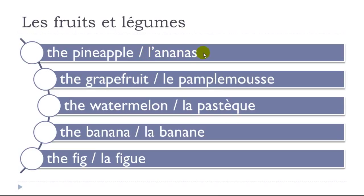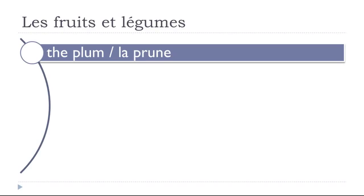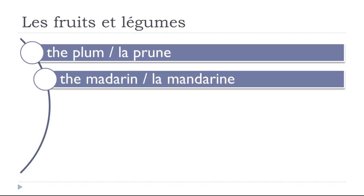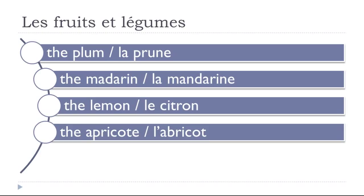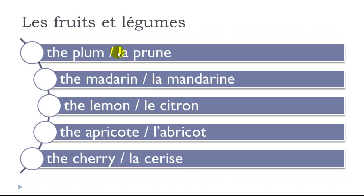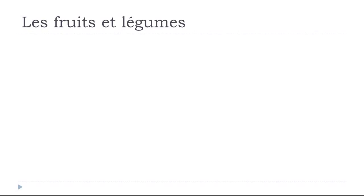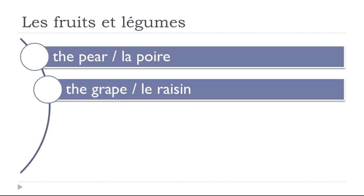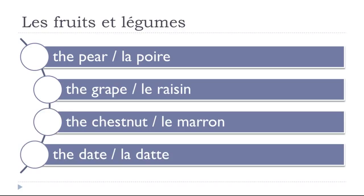L'ananas (pineapple), le pamplemousse (grapefruit), la pastèque (watermelon), la banane (banana), la figue (fig), la prune (plum), la mandarine (mandarin), le citron (lemon), l'abricot (apricot), la cerise (cherry), la poire (pear), le raisin (grapes), le marron (chestnut), la date (date).